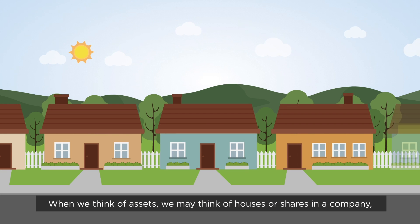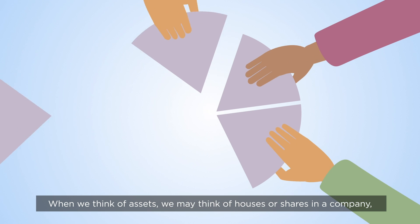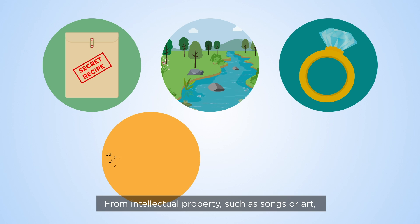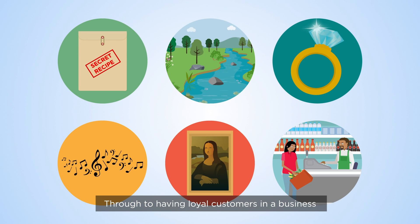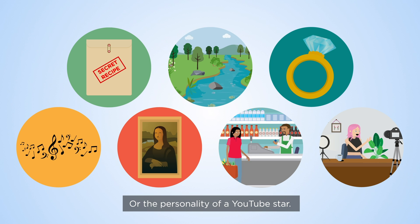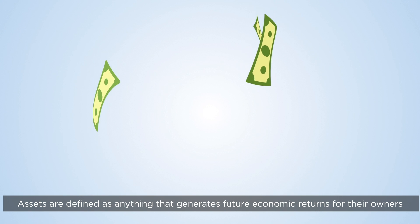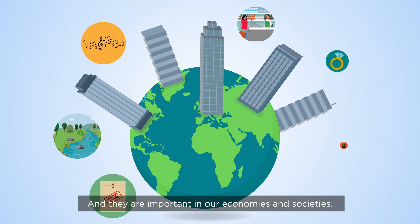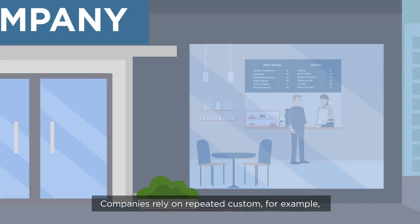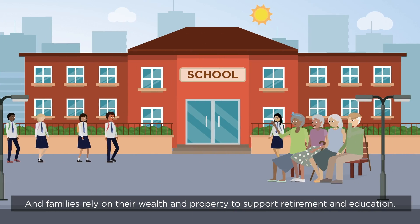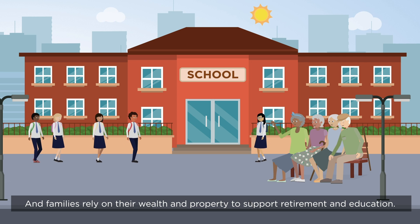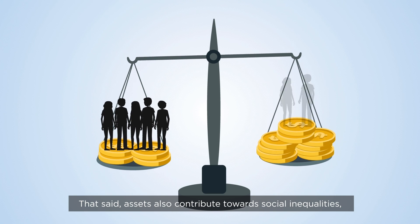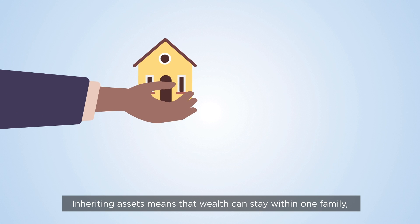When we think of assets we may think of houses or shares in a company, but almost anything can be an asset — from intellectual property such as songs or art, through to having loyal customers in a business or the personality of a YouTube star. Assets are defined as anything that generates future economic returns for their owners. They're important in our economies and societies: companies rely on repeated custom, and families rely on their wealth and property to support retirement and education. That said, assets also contribute towards social inequalities.